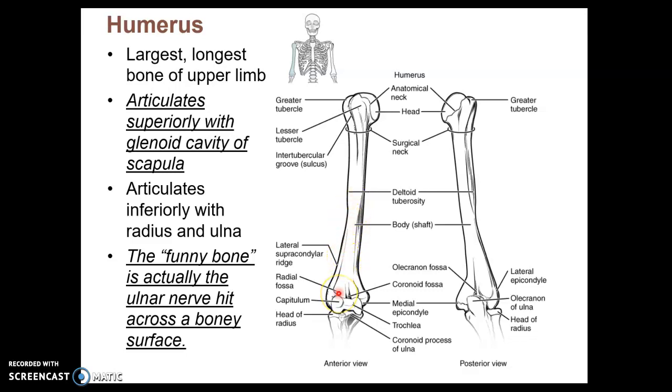At the distal end, where the elbow is located, we have a capitulum, where the radius articulates with, and the trochlea, which the ulna articulates with, which is the main part of your elbow.